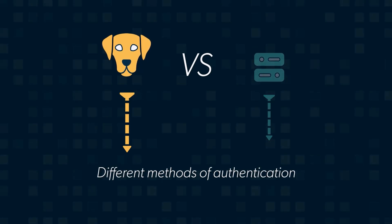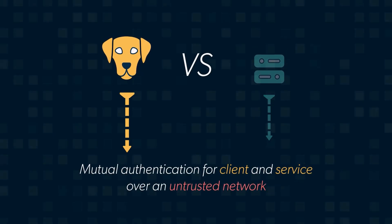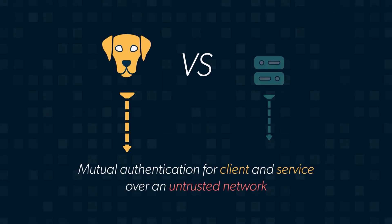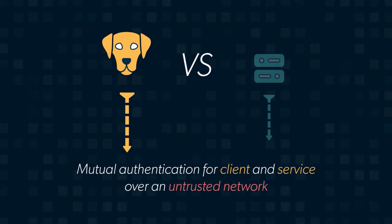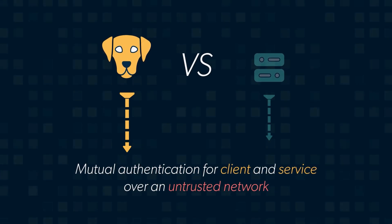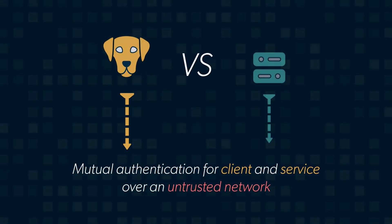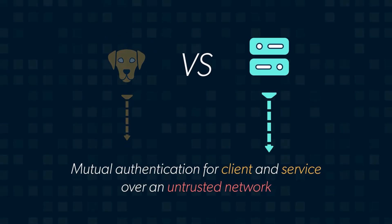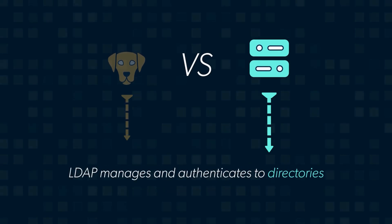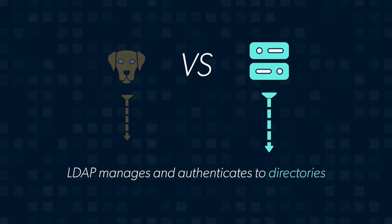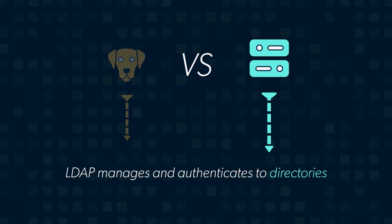Kerberos is primarily used for mutual authentication between a client and a service over an untrusted network, like the Internet. LDAP is primarily used to manage and authenticate to directories.